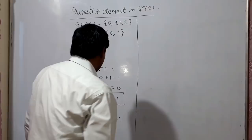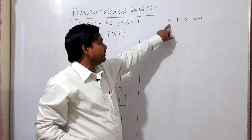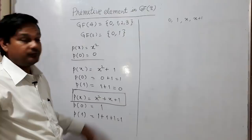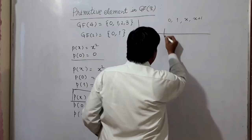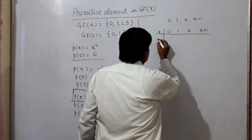When any expression is divided by x² + x + 1, the possible remainders are 0, 1, x, or x + 1. I will prepare the additive and multiplicative tables of GF4 using these four elements: 0, 1, x, and x + 1.